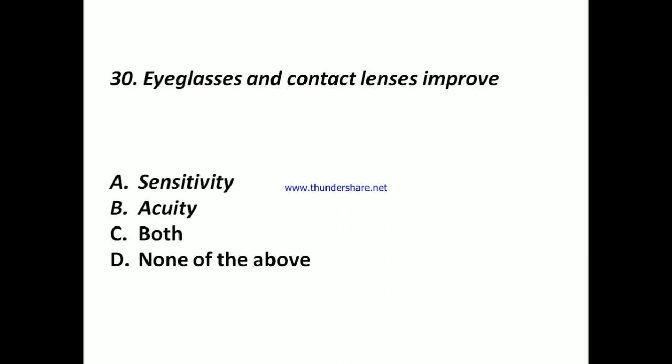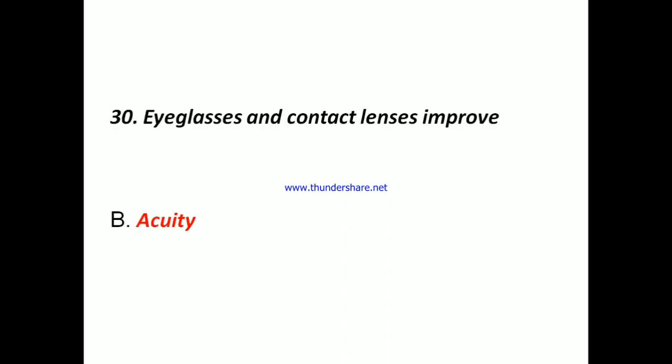Question 29: Hearing aids improve: A) Sensitivity, B) Acuity, C) Both, D) None of the above. Answer: A) Sensitivity. Question 30: Eyeglasses and contact lenses improve: A) Sensitivity, B) Acuity, C) Both, D) None of the above. Answer: B) Acuity.